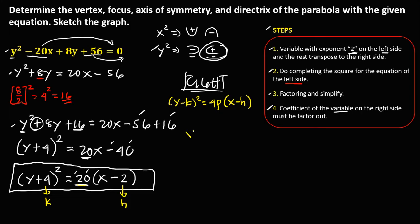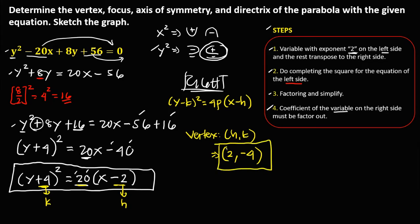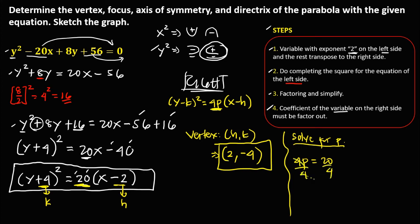To solve for the vertex, since vertex is (h, k): from the standard equation, since we have x minus 2, h is positive 2. Since we have y plus 4, k is negative 4. So the vertex is (2, −4). To solve for p: since 4p equals 20, divide both sides by 4, giving p equals 5.